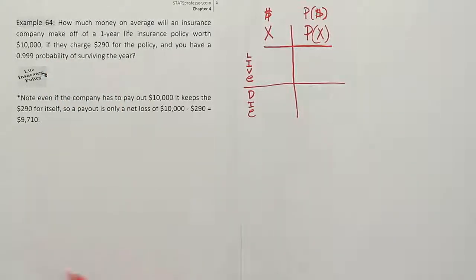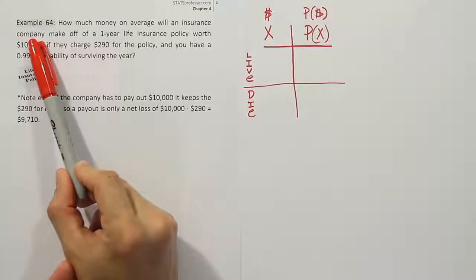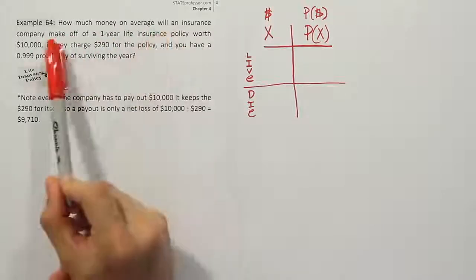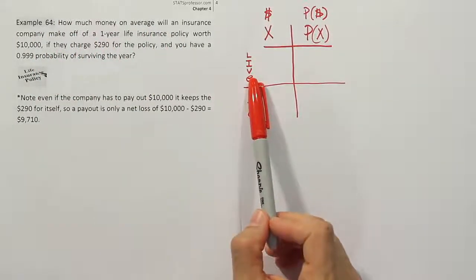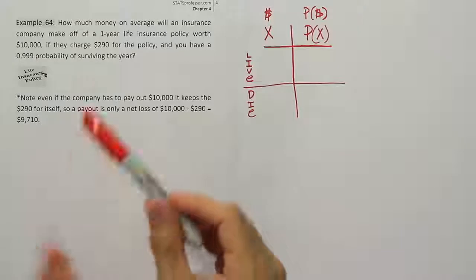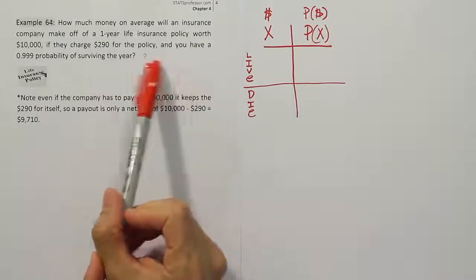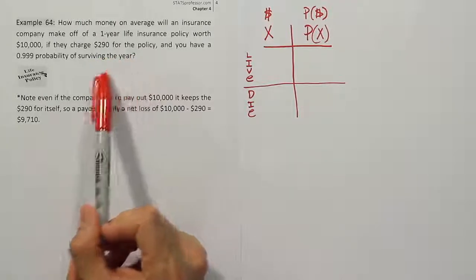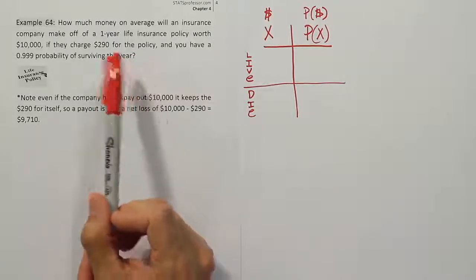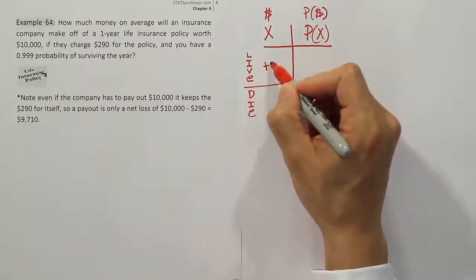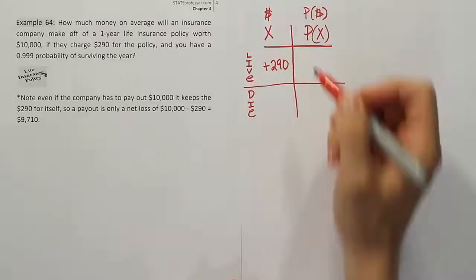Let's think about that. Now we're doing this from the perspective of the company. That's important too. If my customer lives the entire year, what does that mean for me as the insurance company? I charged $290 for the policy. The person paid me $290 for the protection of the life insurance policy. But at the end of the year, the person is still alive, so I don't need to pay him anything. Ultimately, I get to keep his $290, so that's a gain of $290.